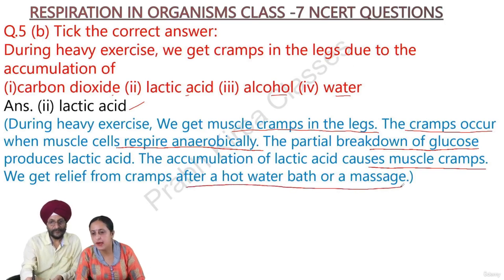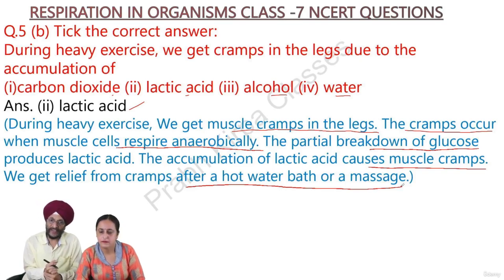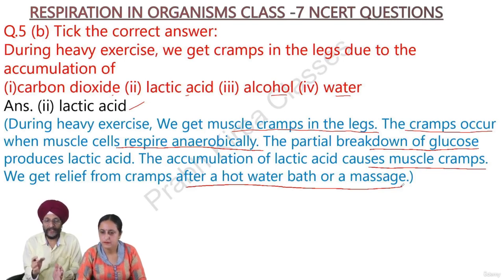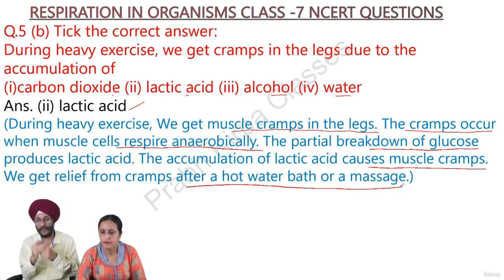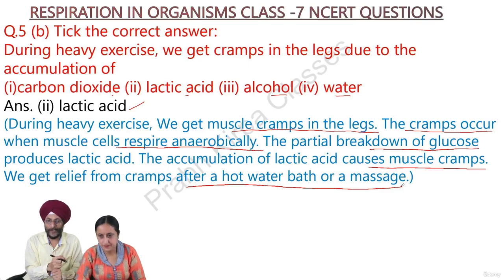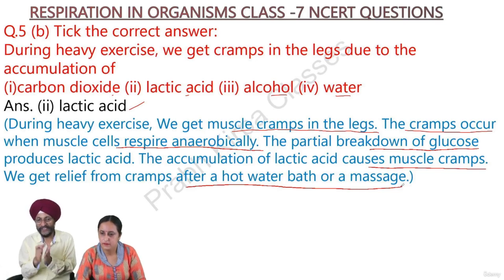We get relief from cramps after a hot water bath or a massage. When we do heavy exercise, our muscles respire anaerobically — meaning in the absence of oxygen. Anaerobic respiration causes partial breakdown of glucose, producing lactic acid. The accumulation of lactic acid causes muscle cramps, which can be relieved by a warm water bath or massage.